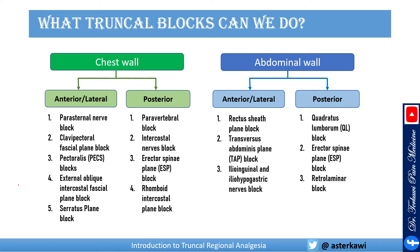These are relatively easy blocks — some more challenging, but in general they are easy. If you look at the chest wall, anterior and lateral, you have the paravertebral block, clavipectoral fascial plane block, PECS block, external oblique, and intercostal fascial plane block, serratus plane block, parasternal nerve block, and intercostal nerve block. On the posterior wall, you have the erector spinae plane block and rhomboid intercostal plane block. For the abdominal wall, anteriorly and laterally, you have the rectus sheath block, TAP block, and ilioinguinal nerve block. Posteriorly, you have the QL block and erector spinae retrolaminar.